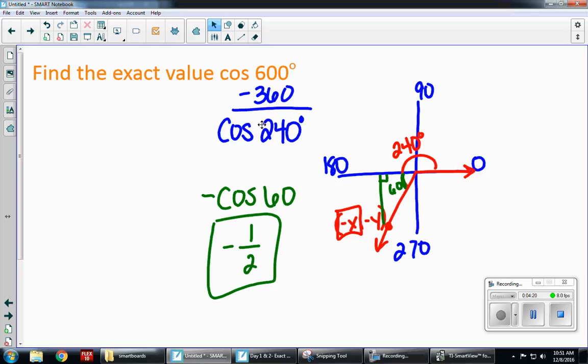So finding exact trig values with coterminal angles is the same process, except your first step is going to be to add or subtract 360 degrees so you get back to a number that you're used to sketching.